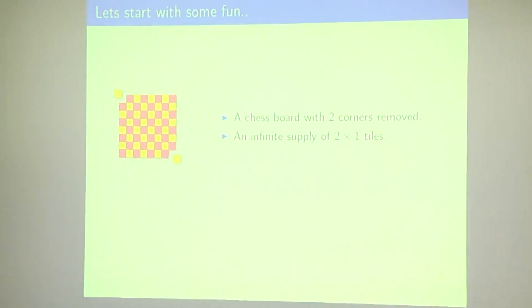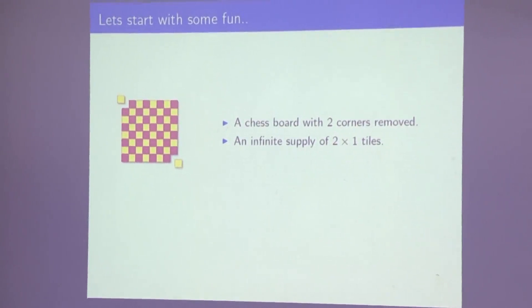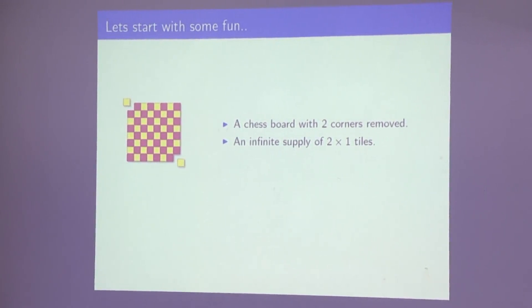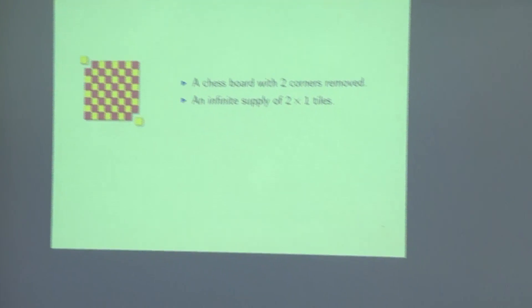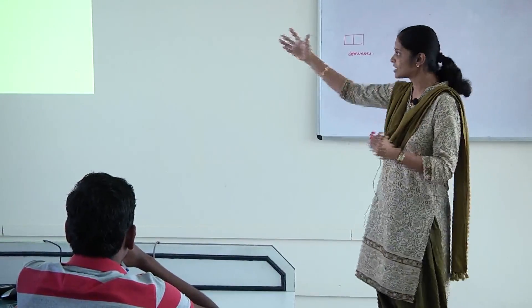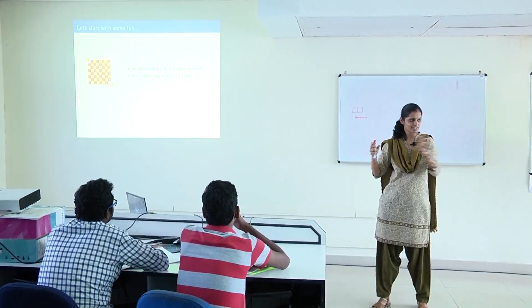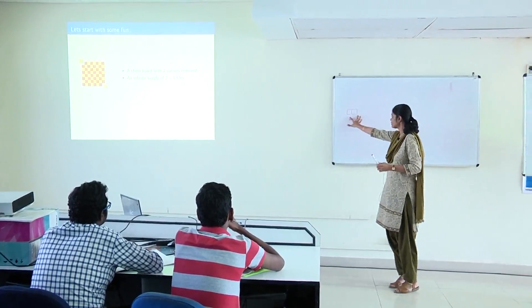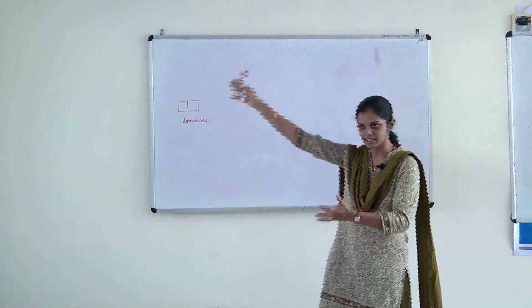There are several ways to tile the complete chessboard. Now let's say I remove one corner. Can you tile the chessboard using dominoes? The reasoning is that you are left with 63 squares when one tile is removed. Every domino covers an even number of squares, and therefore if you give me 63 squares, I am not going to be able to tile it — the parity argument shows it's impossible.